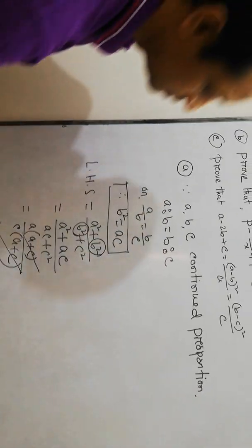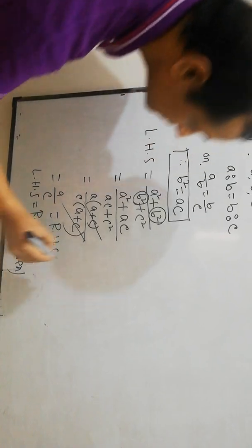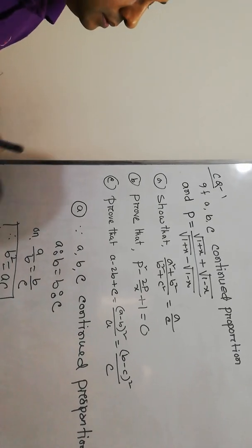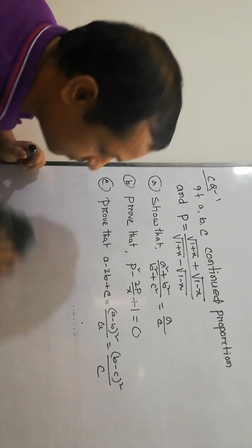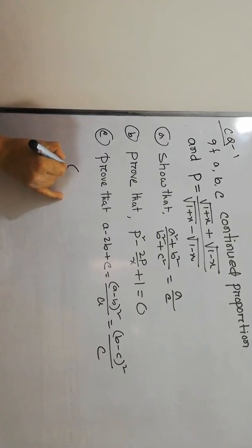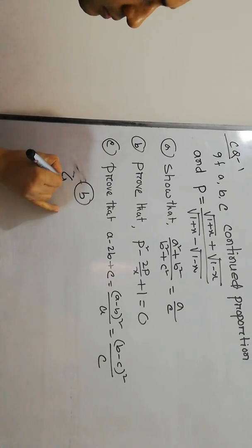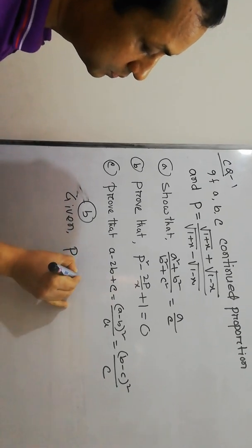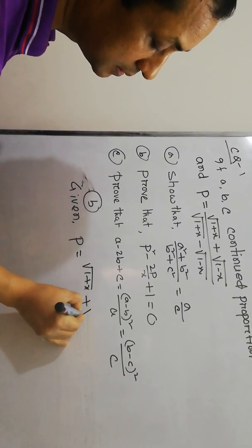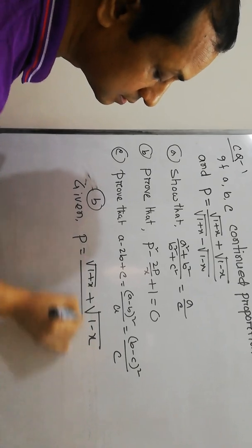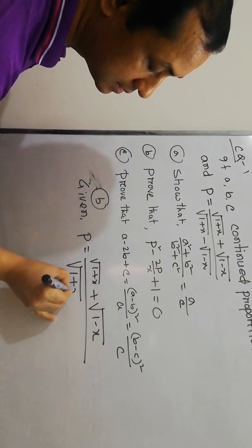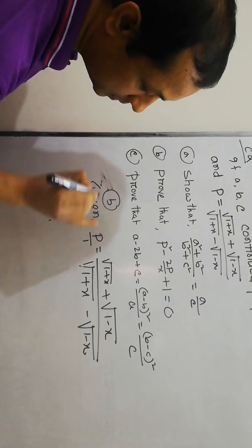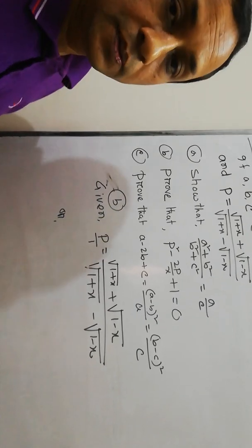Part A is complete. Next, Part B. Given: p equals root over (1 + x) plus root over (1 − x), divided by root over (1 + x) minus root over (1 − x).